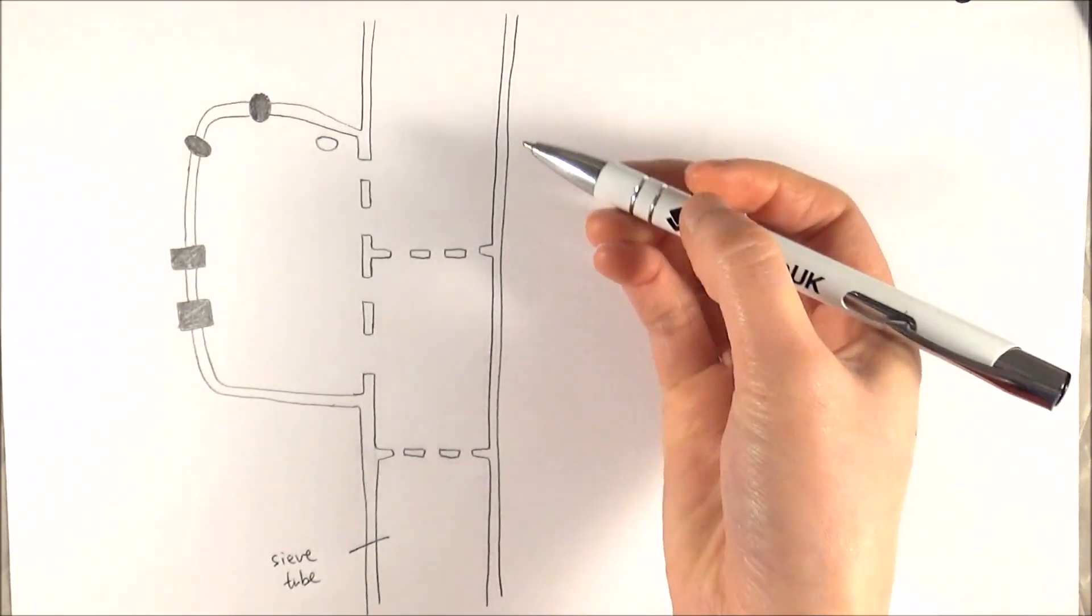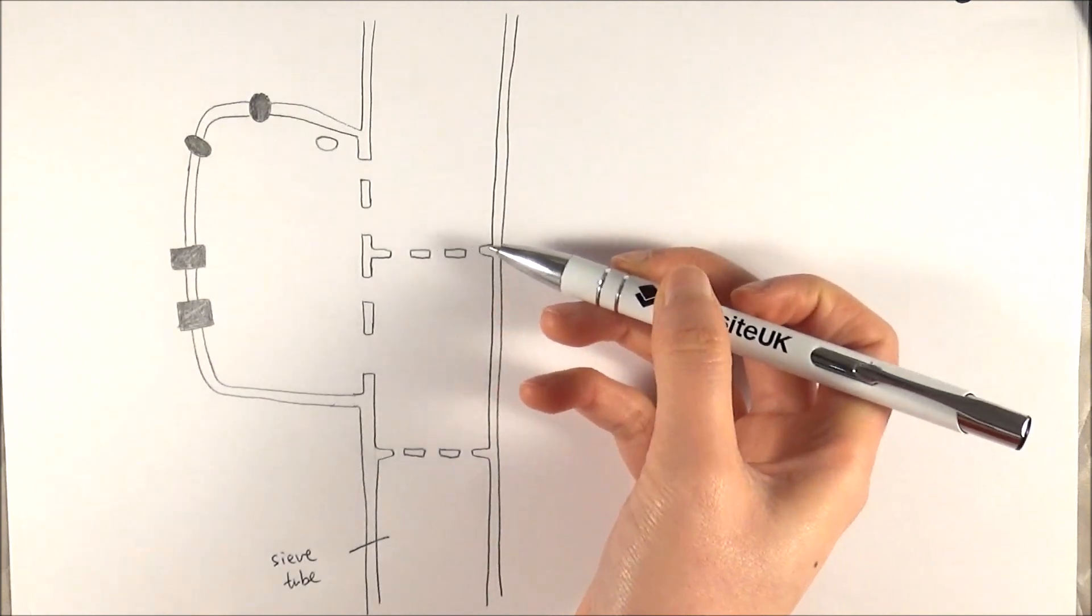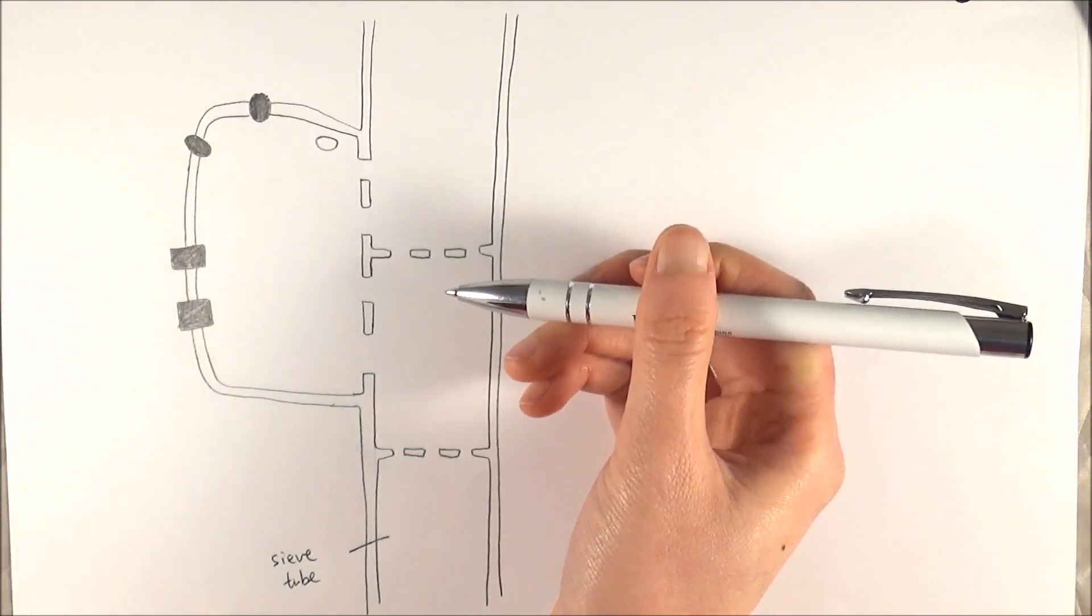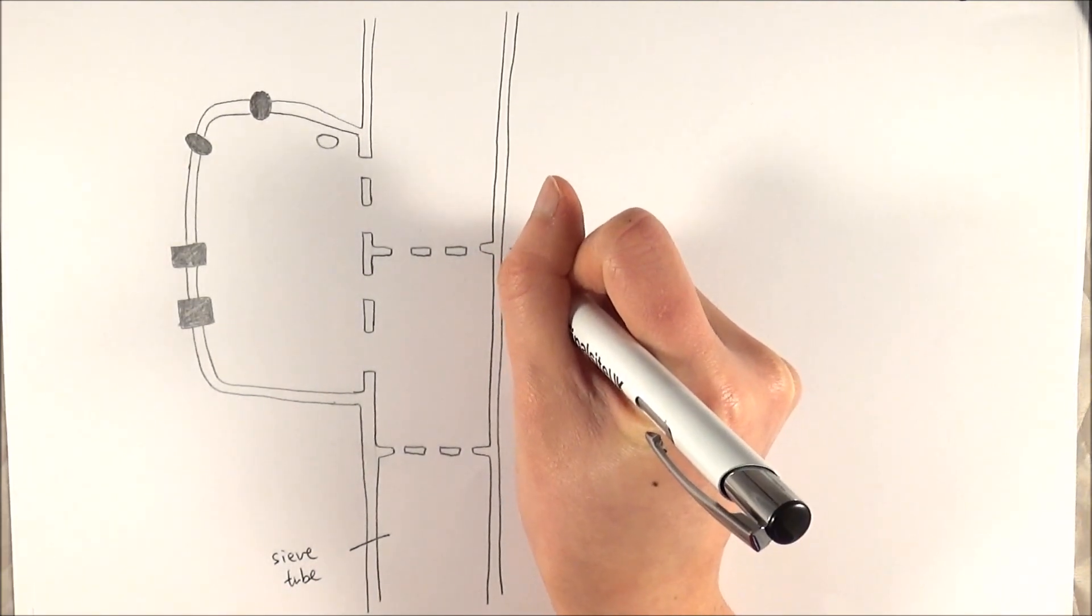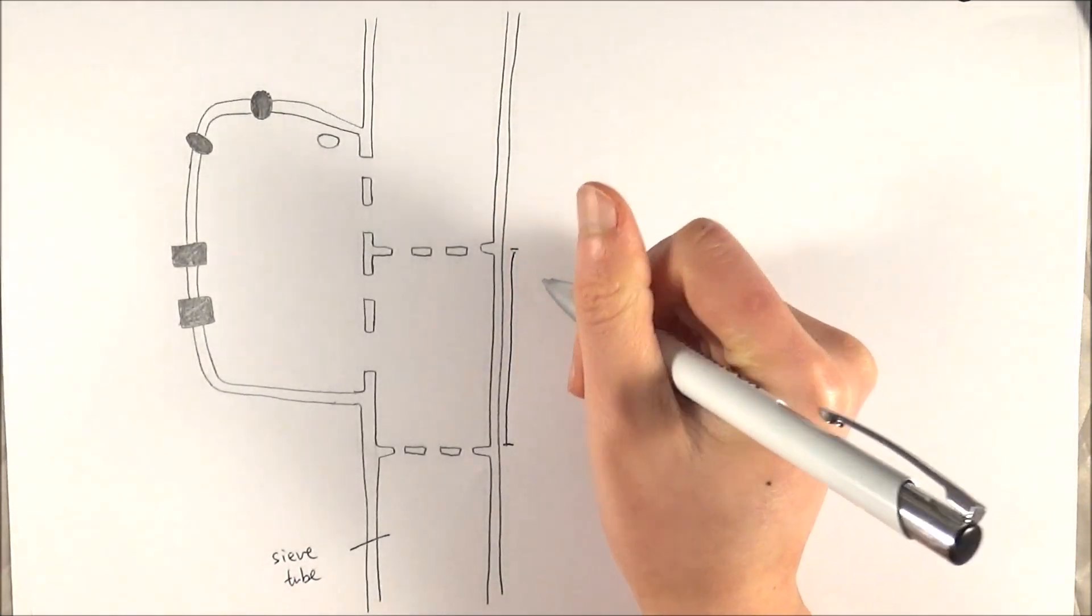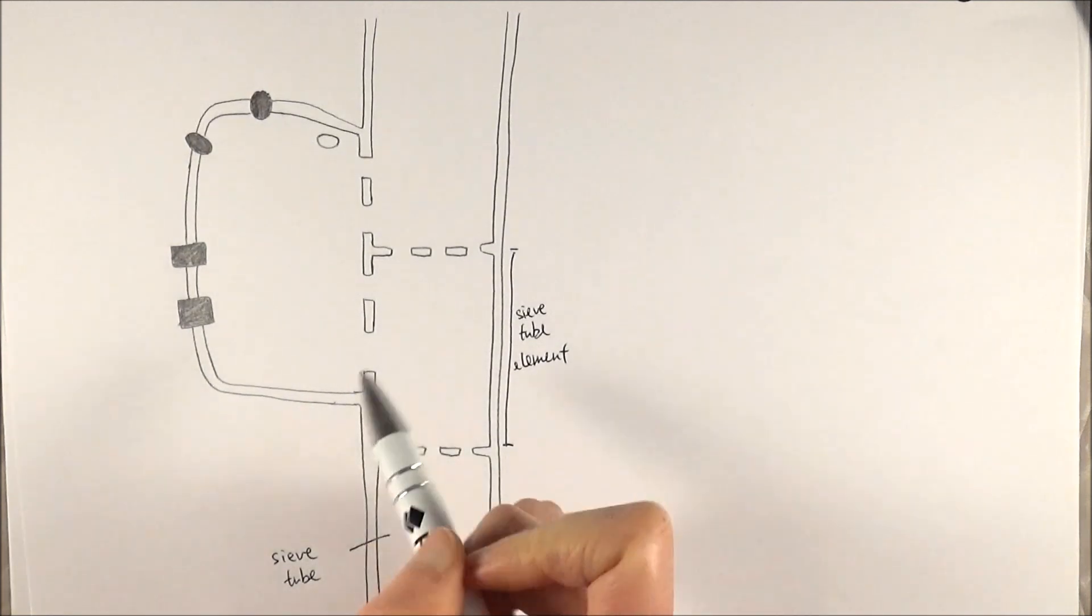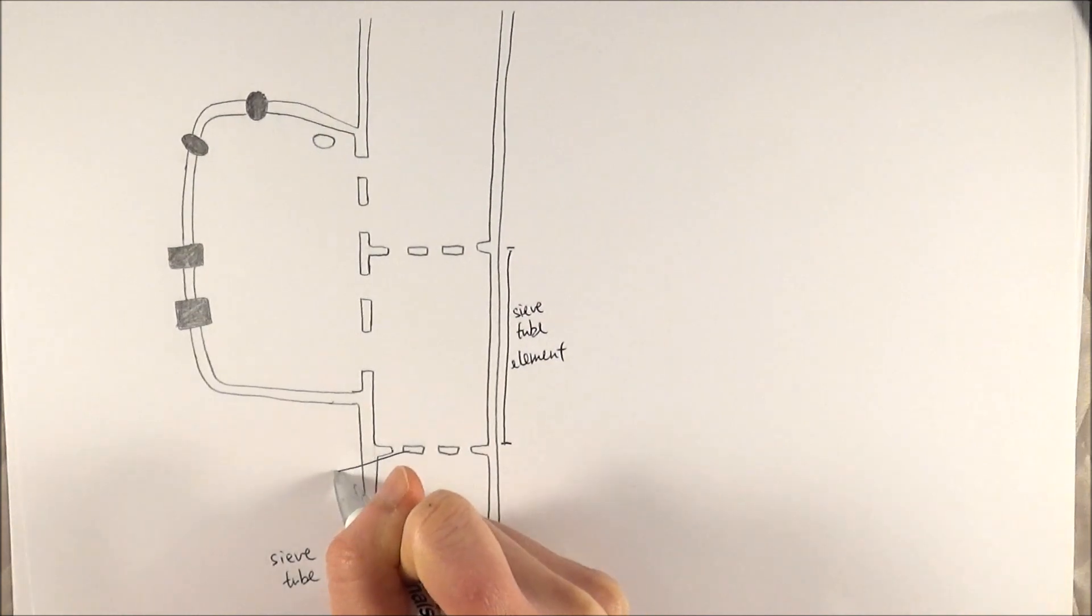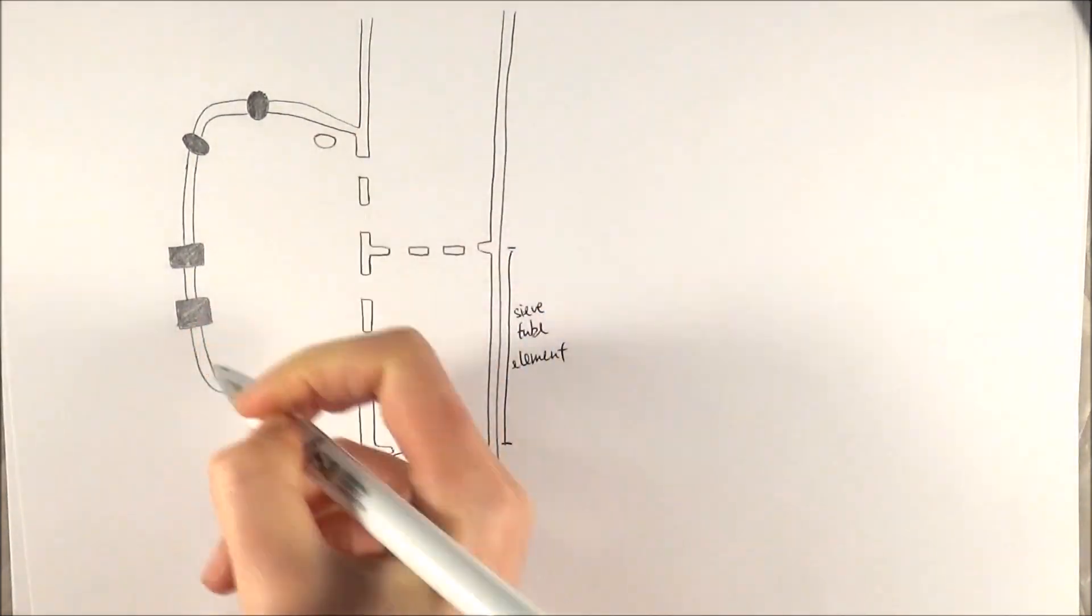The original phloem is formed by different cells stacked together, and then their cell walls broke down in parts to allow substances to flow through more easily. Each one of these individual parts of the sieve tube or phloem is called the sieve tube element. We've got the sieve plates, which are the end plates of the original cell walls but with gaps in them. And we've got a companion cell.